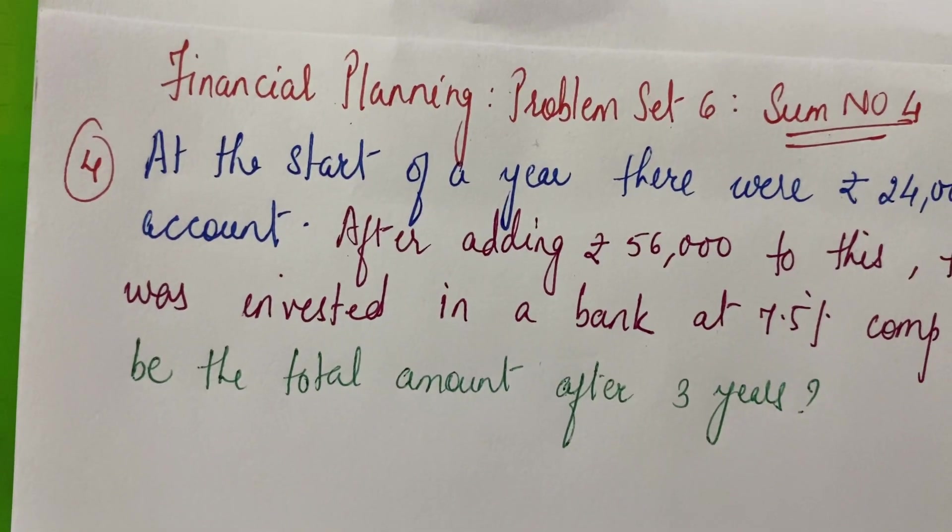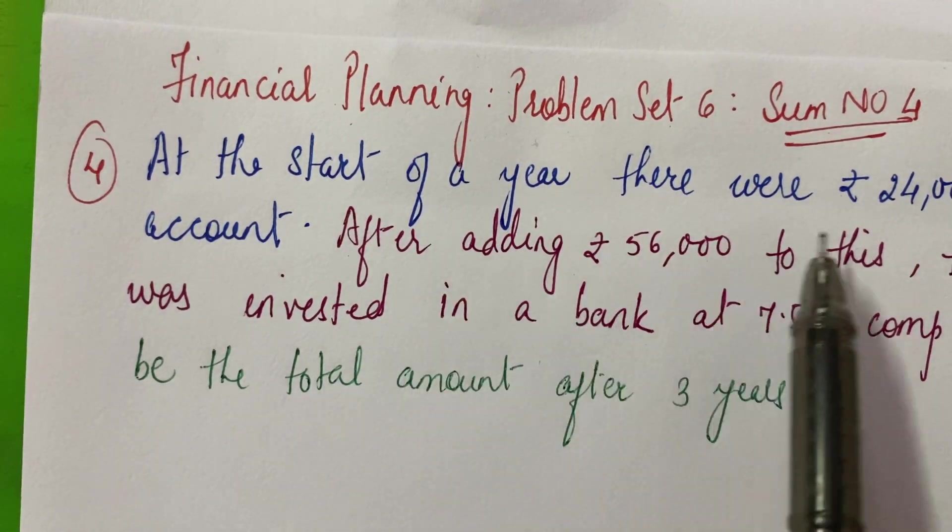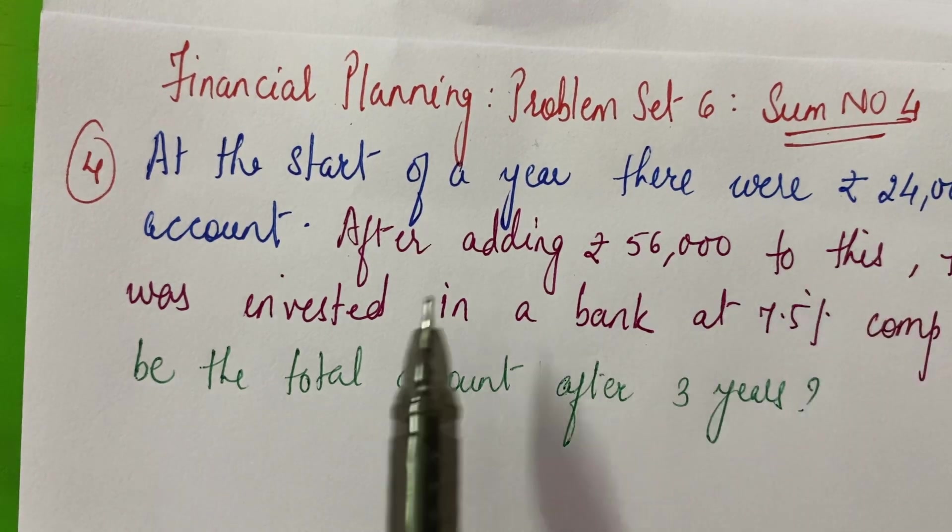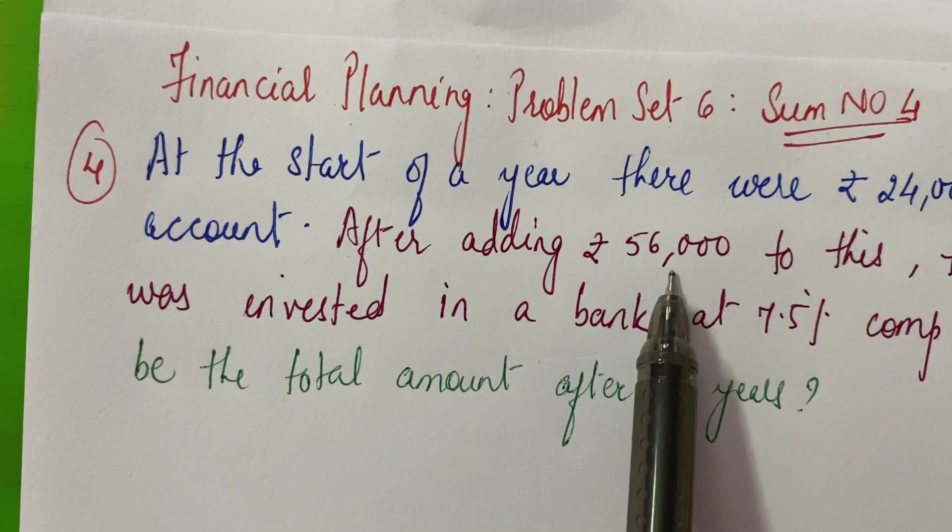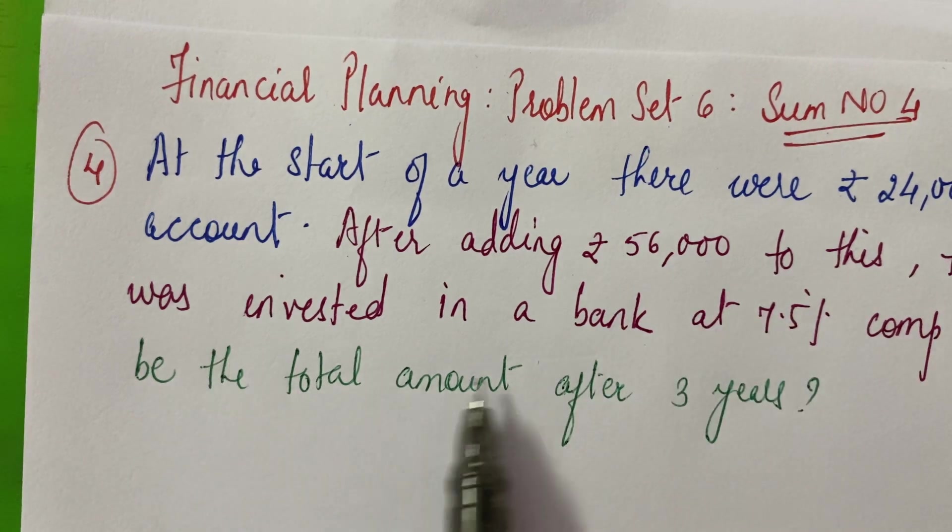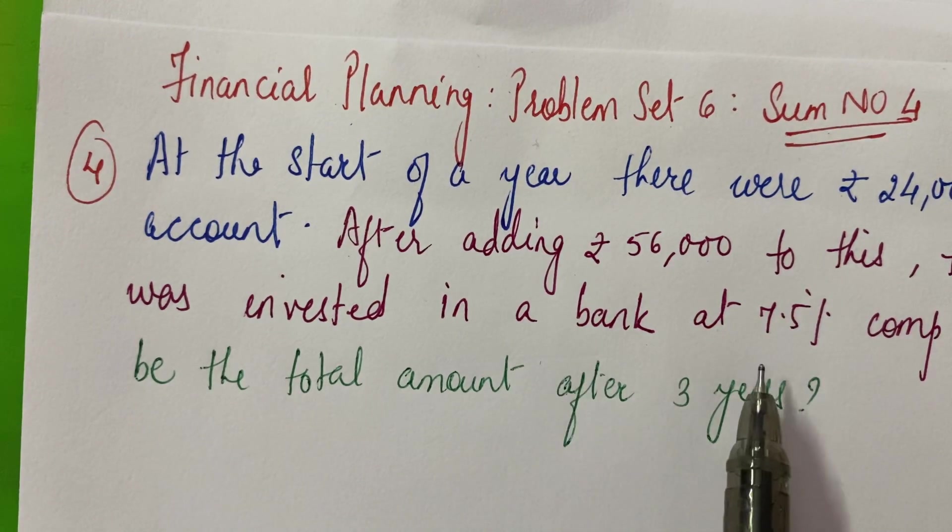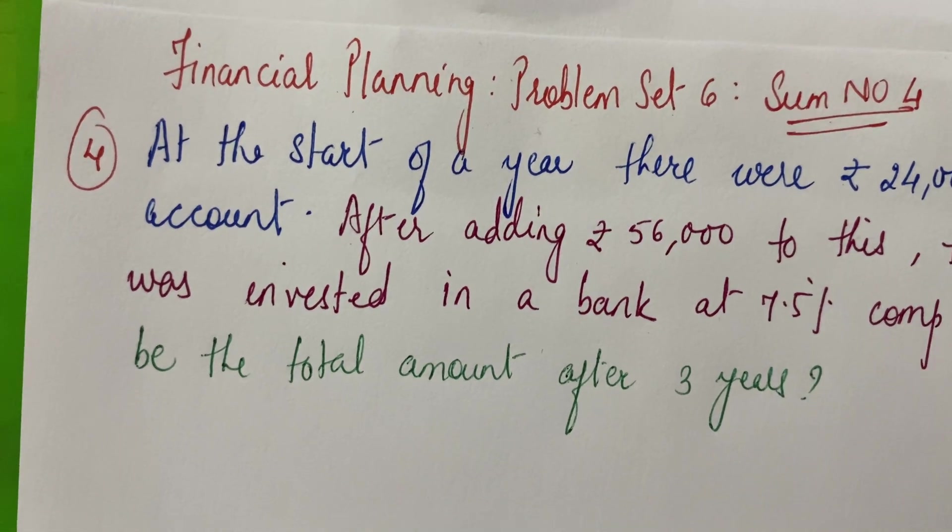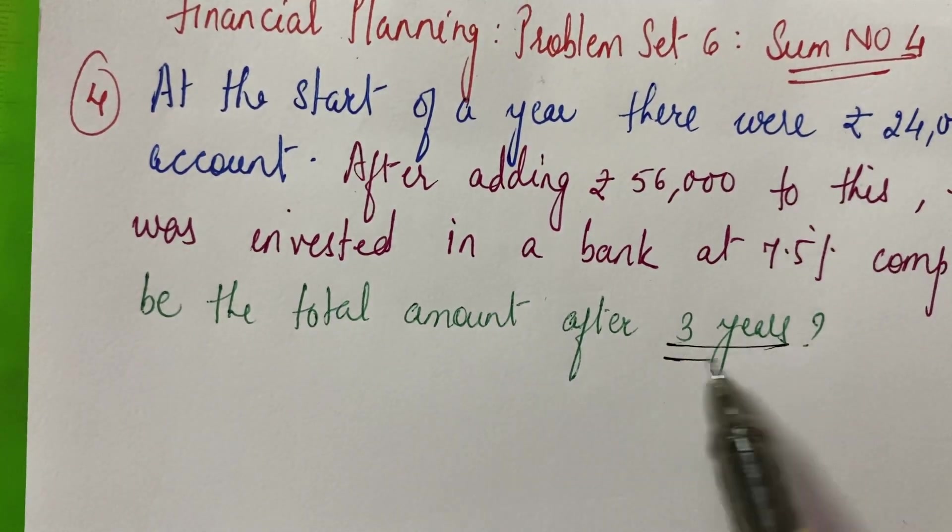In this sum, at the start of the year there were Rs. 24,000, then Rs. 56,000 were added to this and the entire amount was invested in a bank at 7.5% compound interest. You have to find out the total amount after 3 years.